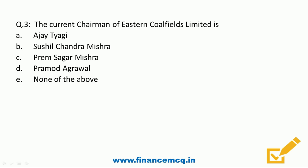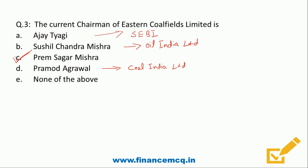Question three: Who is the current chairman of Eastern Coalfields Limited? Options: a) Ajay Tyagi, b) Sushil Chandra Mishra, c) Prem Sagar Mishra, d) Pramod Agarwal, e) None of the above. The correct answer is option C - Prem Sagar Mishra. Ajay Tyagi is the SEBI chairman, Sushil Chandra Mishra is chairman of Oil India Limited, and Pramod Agarwal is chairman of Coal India Limited, the parent company of ECL.